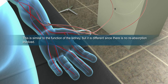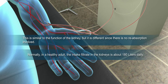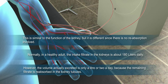This is similar to the function of the kidney, but it is different since there is no reabsorption involved. Normally, in a healthy adult, the filtrate in the kidneys is about 180 liters daily. However, the volume actually excreted is only one or two liters a day, because the remaining filtrate is reabsorbed in the kidney tubules.